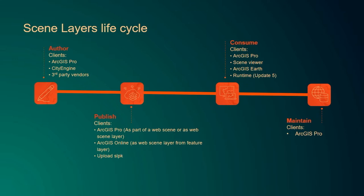ArcGIS Pro has a rich sharing experience that you can use to create web scenes and web scene layers. You can also create scene layers using ArcGIS Online directly, or you can upload SLPKs. The consuming clients for scene layers right now are ArcGIS Pro, which we will mainly present today, the JavaScript API, runtimes, and ArcGIS Earth. The last part we are supporting for feature-based scene layers like points or 3D objects is the maintenance of this kind of scene layer, and the editing client we currently support is ArcGIS Pro.